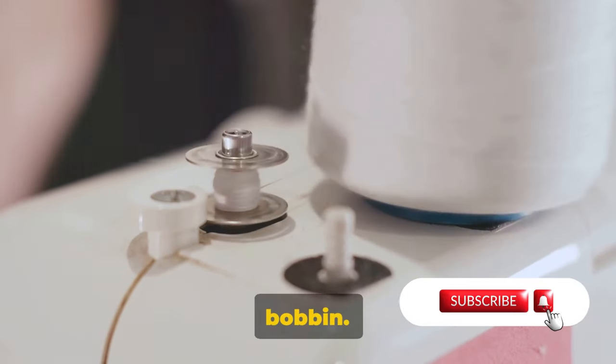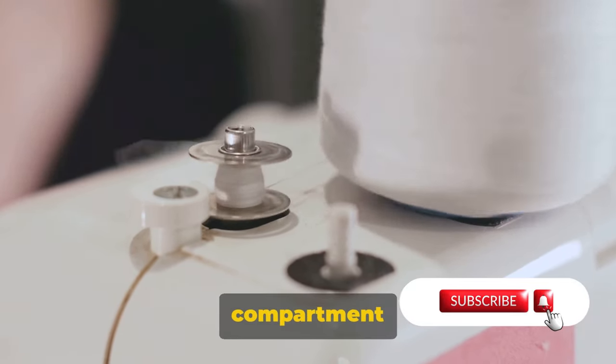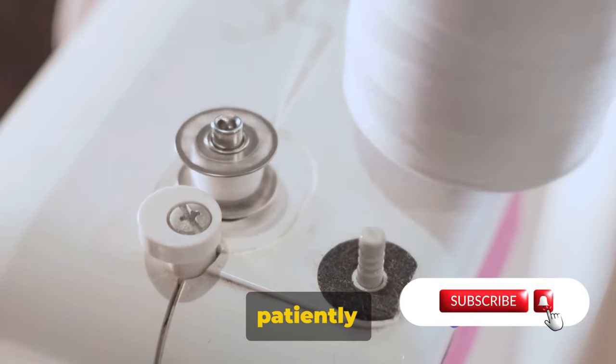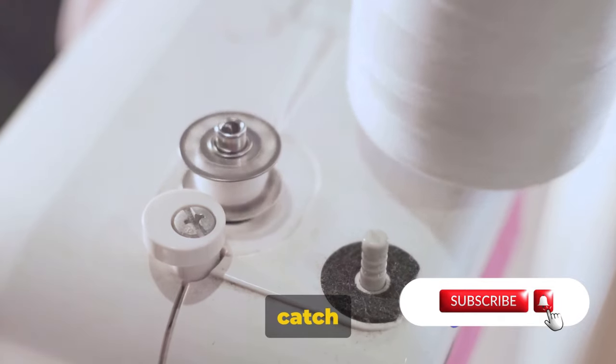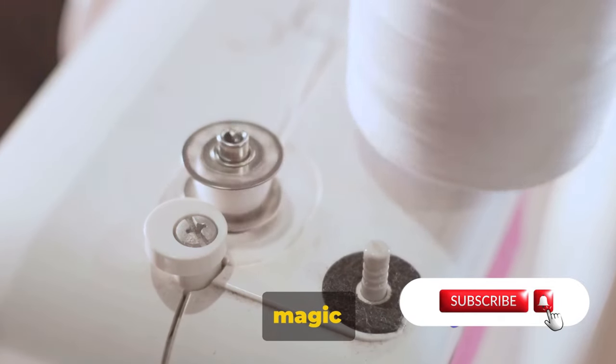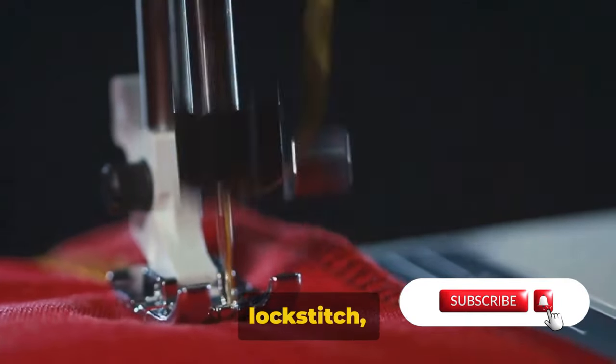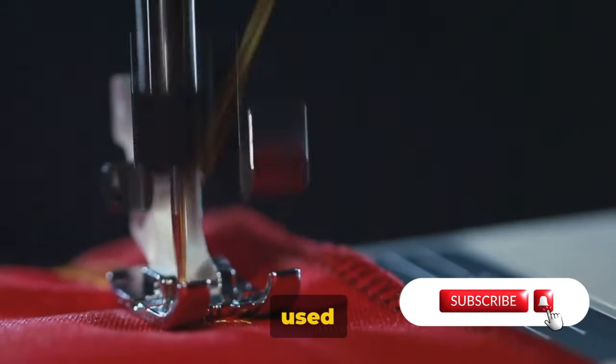Now let's move on to the bobbin. The bobbin is tucked away in a compartment beneath the needle, often out of sight but never out of action. It holds the lower thread, patiently waiting for the needle to dive down and catch it. And when that happens, magic ensues. The bobbin thread intertwines with the needle thread, forming a lock stitch, the most common type of stitch used in sewing.